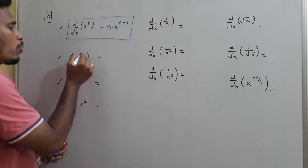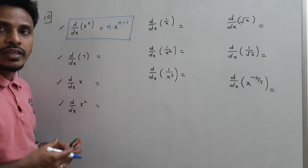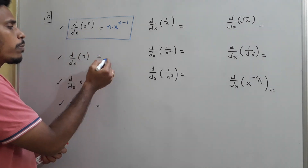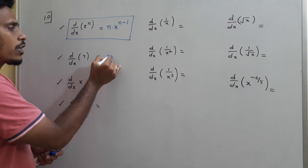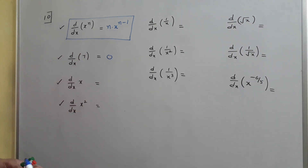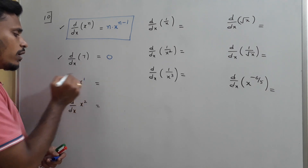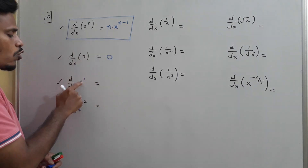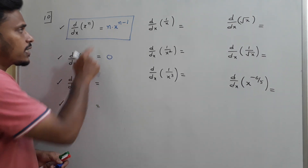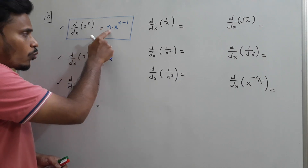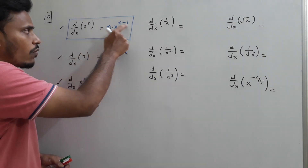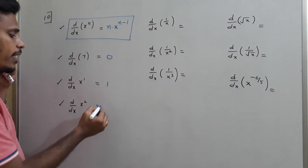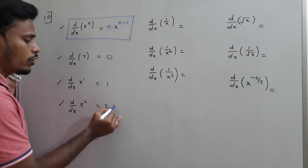For the constant 7, since x is not involved, the derivative is 0. For d/dx of x^1, apply the rule with n=1: 1 times x to the power 1 minus 1, which simplifies to 1. For d/dx of x², the power is 2, so 2 times x to the power 2 minus 1 equals 2x.